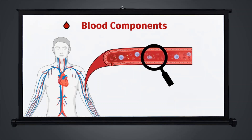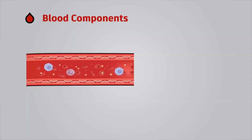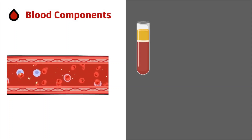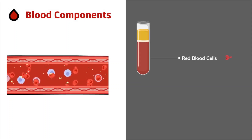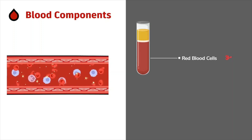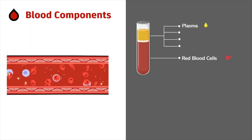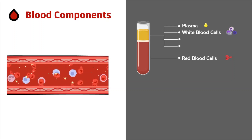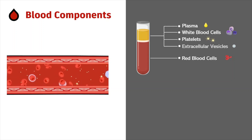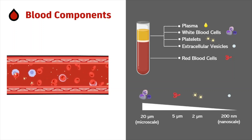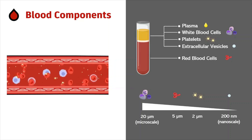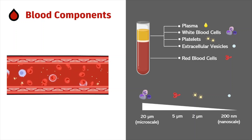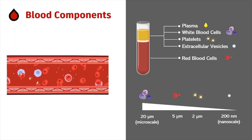Let's take a look. The blood is a heterogeneous mixture of cells and plasma. The majority of the cell components are red blood cells. Within the plasma there are other important cell types such as white blood cells, platelets, and extracellular vesicles. These components are very small, ranging from microscale to nanoscale, thus making it very challenging to isolate them for clinical diagnostics.